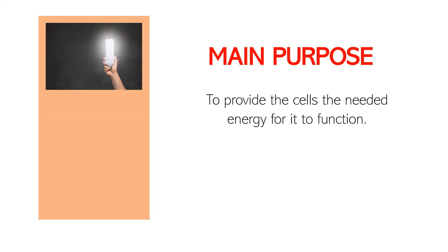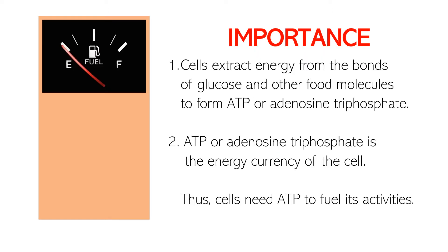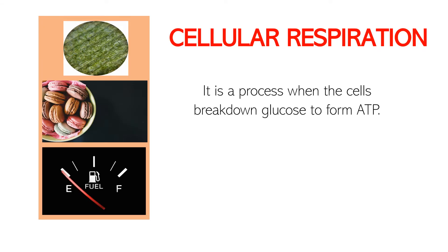The main function of cellular respiration is to provide the cells the needed energy — ATP — for them to function. Cells extract this energy from the bonds of glucose and other food molecules to form ATP, or adenosine triphosphate, which is the energy currency of the cell. Cellular respiration is described as a process when cells break down glucose to form ATP.